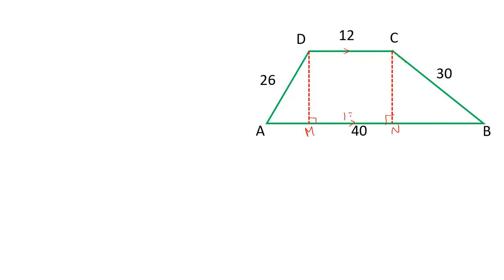So if this is 12 centimeter, MN is also 12 centimeter and the length of AM suppose it is A and BN suppose is B. This is H, this is also H. Now let's write down all the values first.